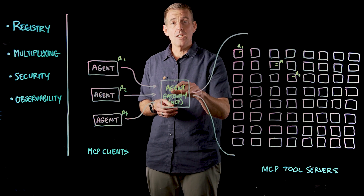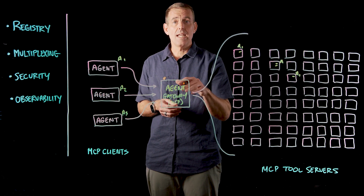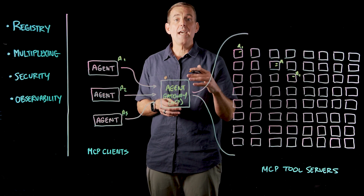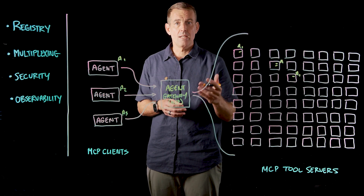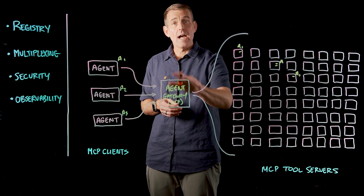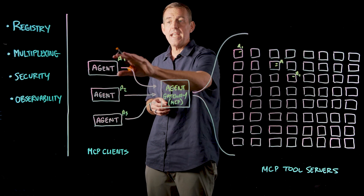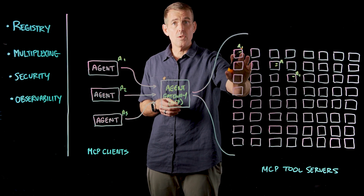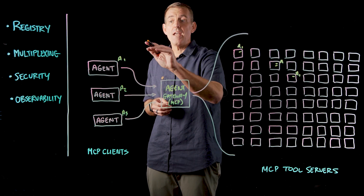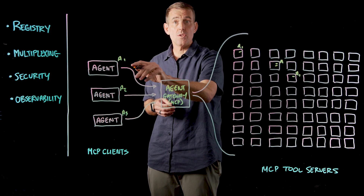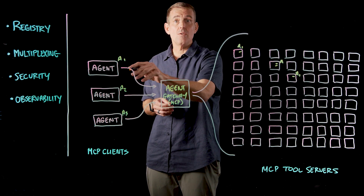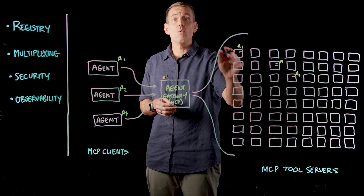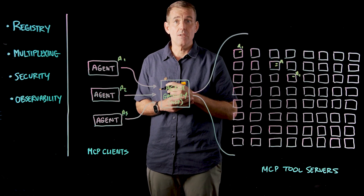In addition, Agent Gateway, when used as an ambient waypoint, can implement on-behalf-of semantics for identity. That means we can not only state that Agent A1 has access to a specific tool in a tool server, but if a given user happens to use that agent, I can allow or deny access when that agent is acting on behalf of that user.